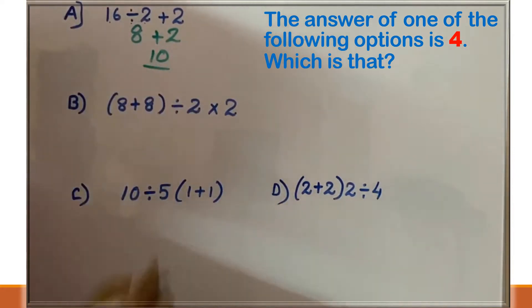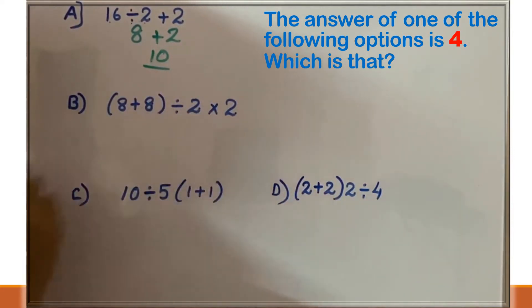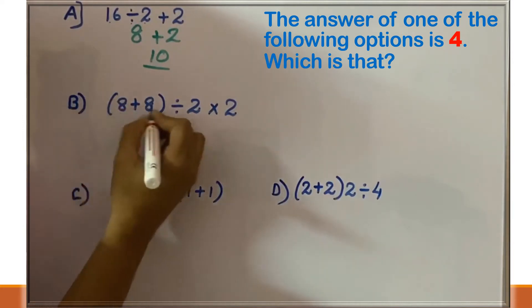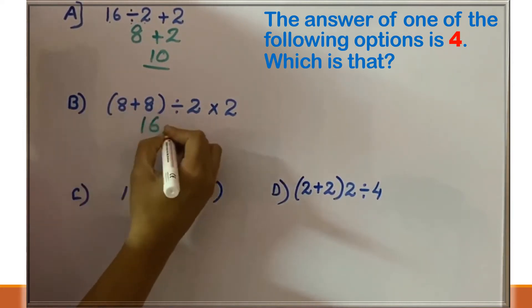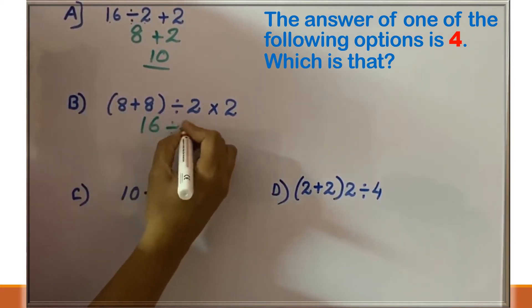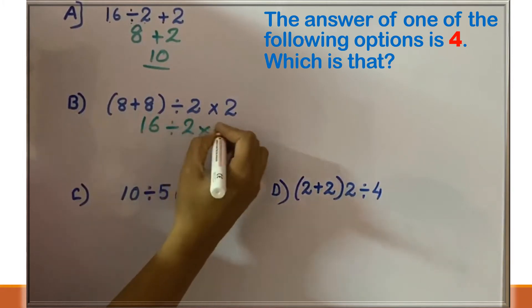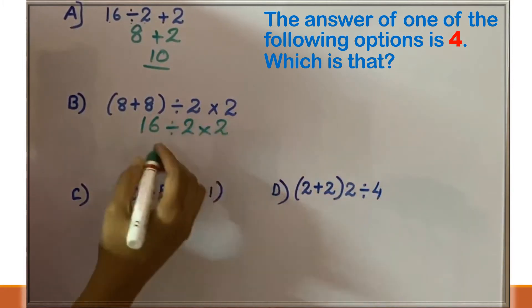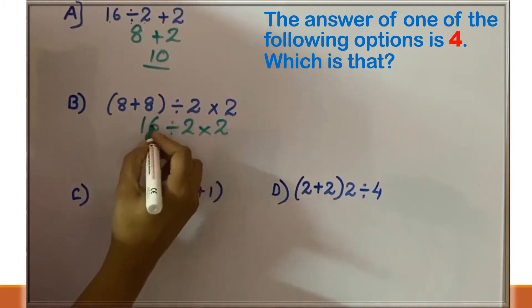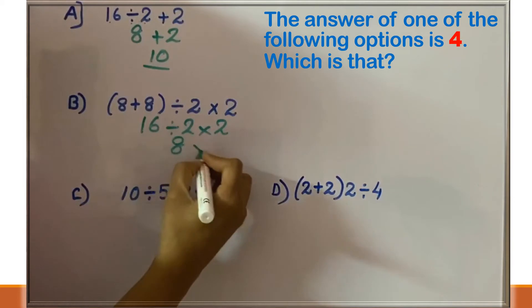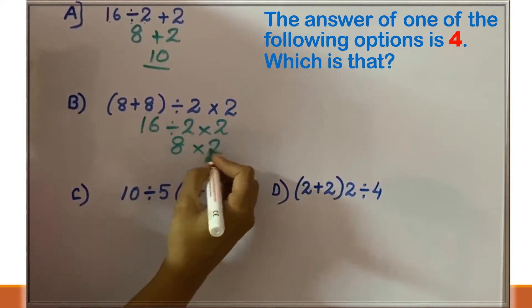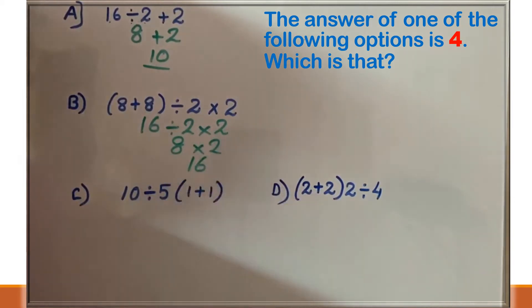Option B has bracket, division, and multiplication. We have to do the bracket first. Inside the bracket, addition: 8 plus 8 is 16. Then it's division and multiplication — we have to do division first. So, 16 divided by 2 is 8. Then the multiplication, and the answer is 16.